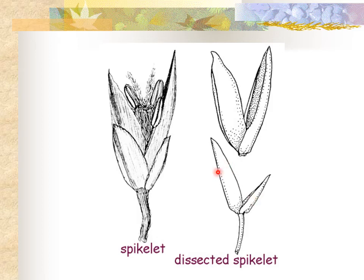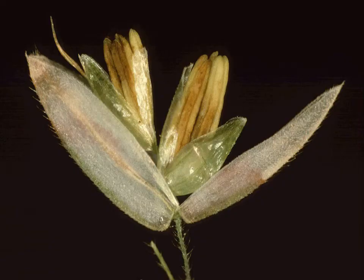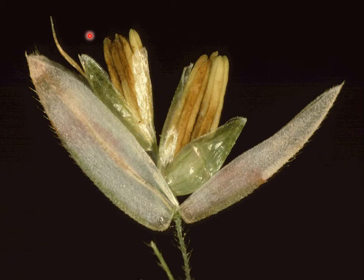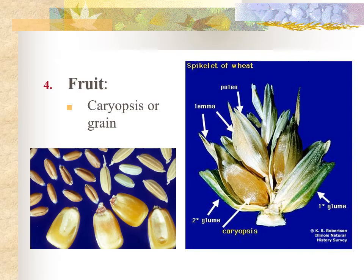Another feature visible on spikelets is the awn — a pointy appendage that we often see on the lemma. Fruits in the Poaceae are known as caryopsis, or grain. These are dry, one-seeded fruits derived from a single carpel, and they closely resemble an achene, except that caryopsis have ovary walls that are fused with the seed coat, which is not the case in an achene.